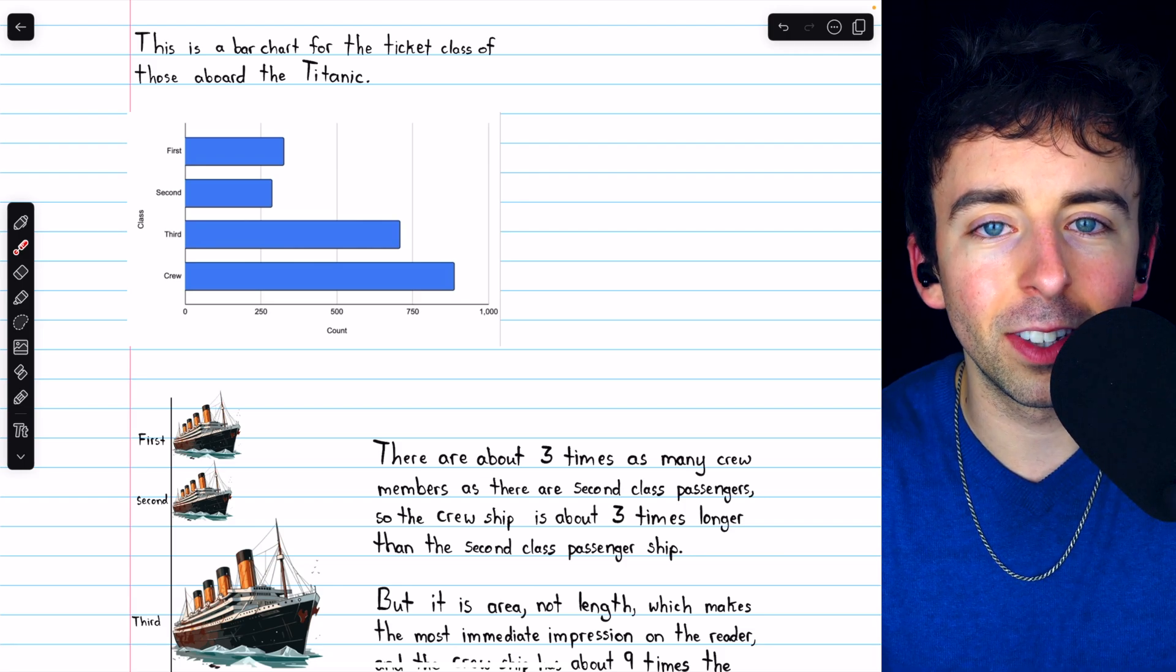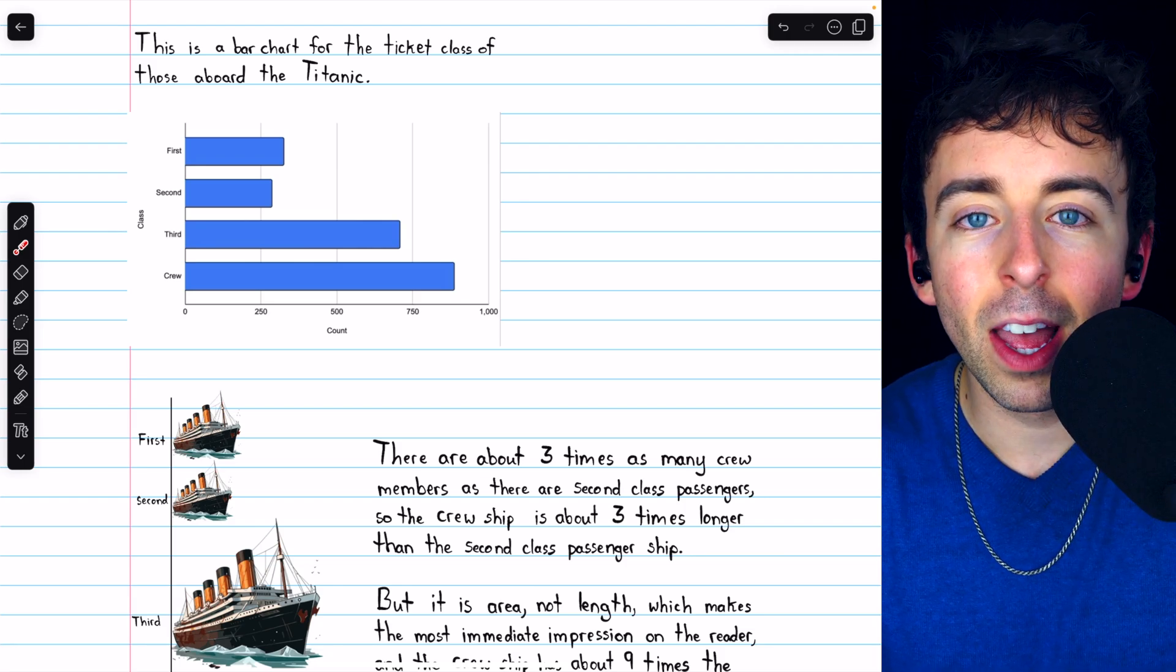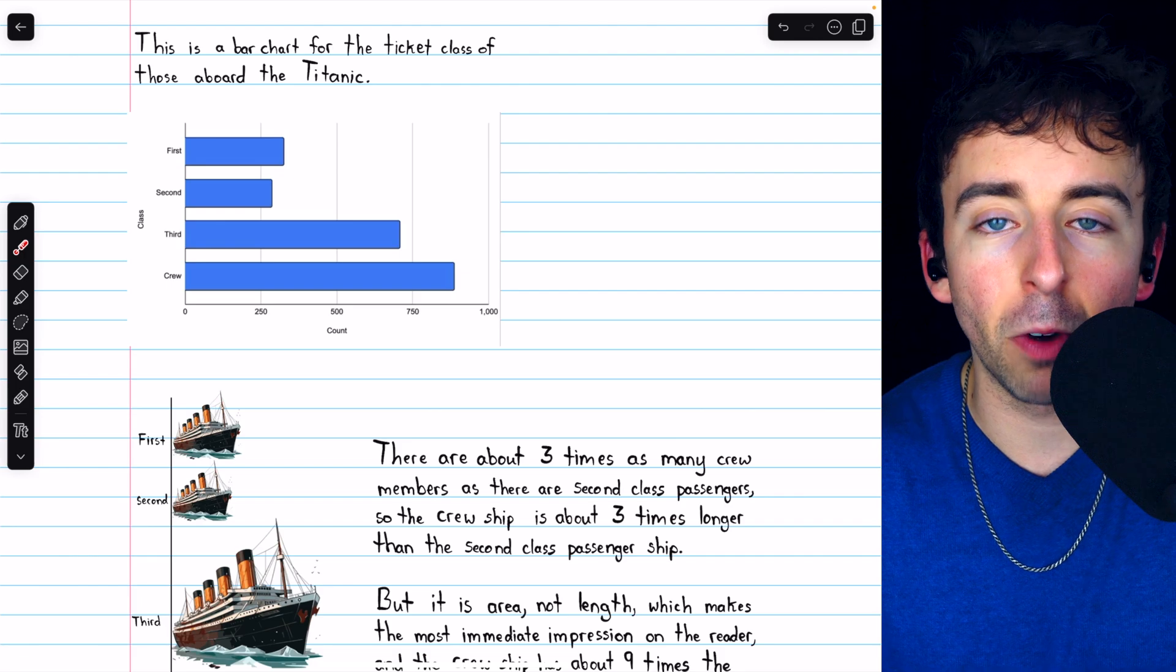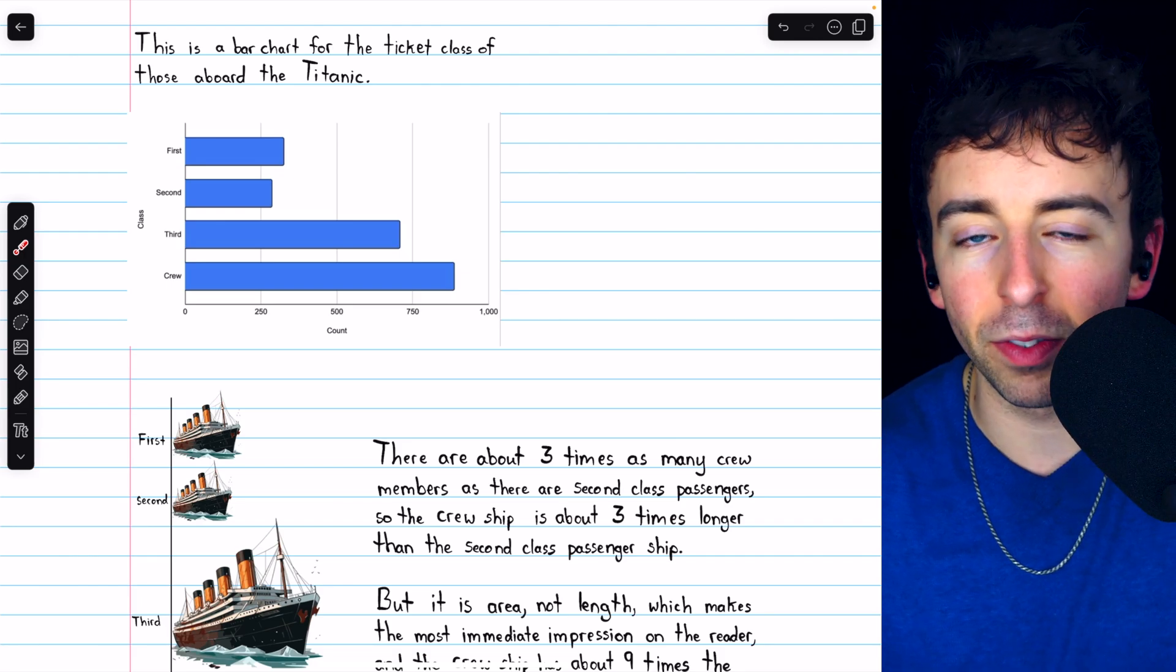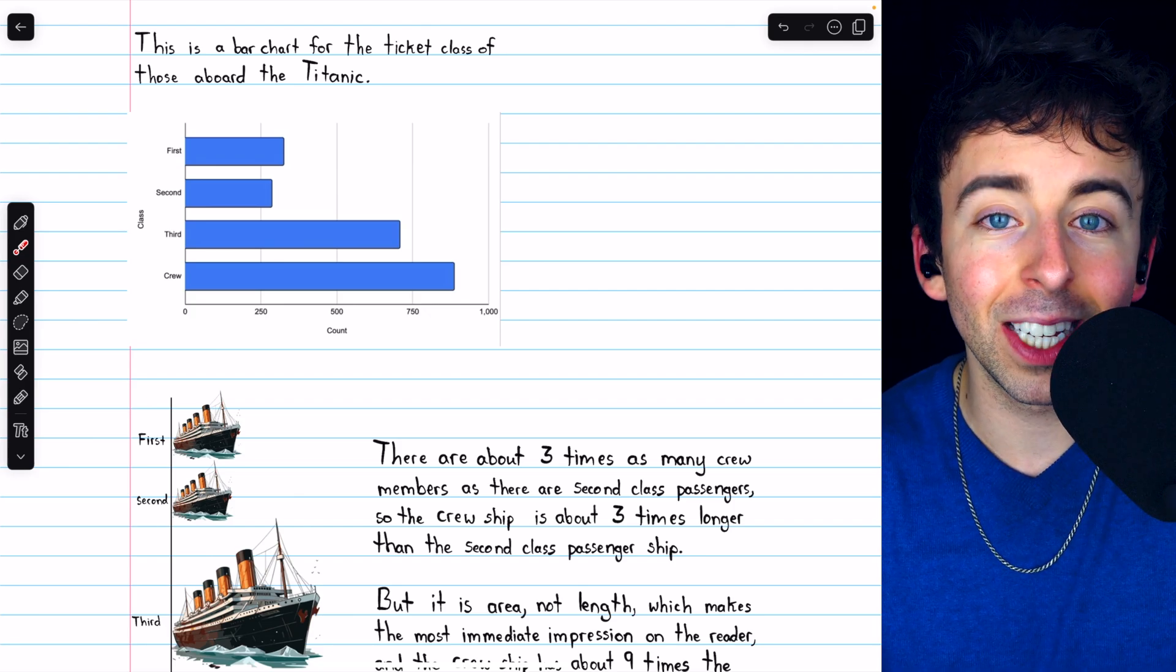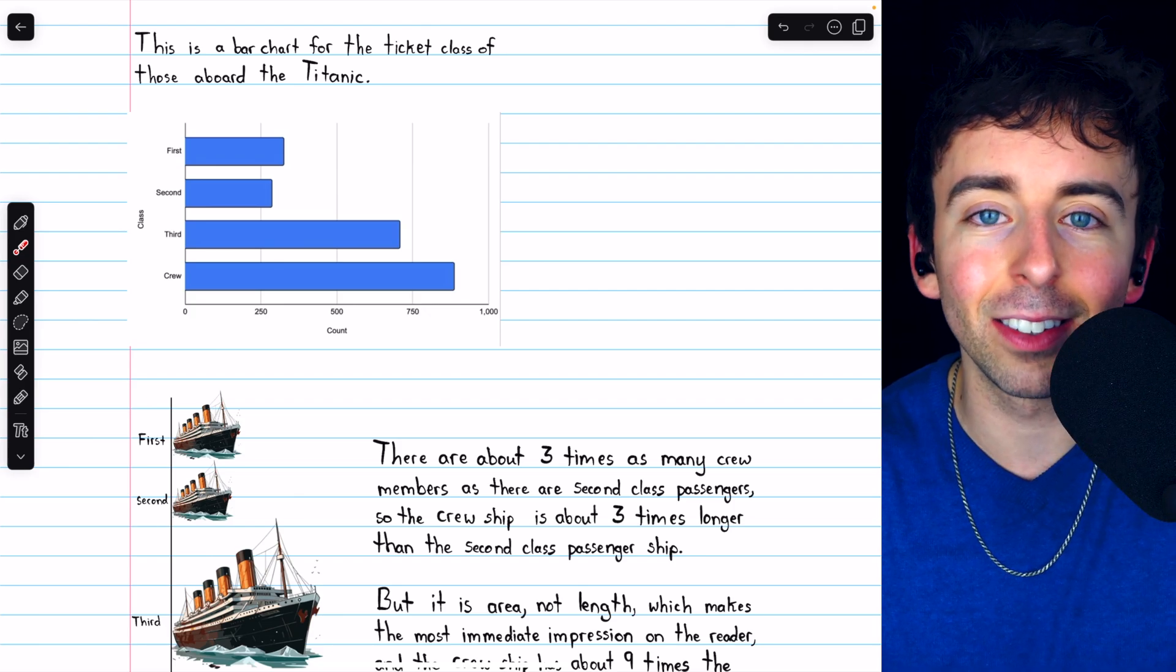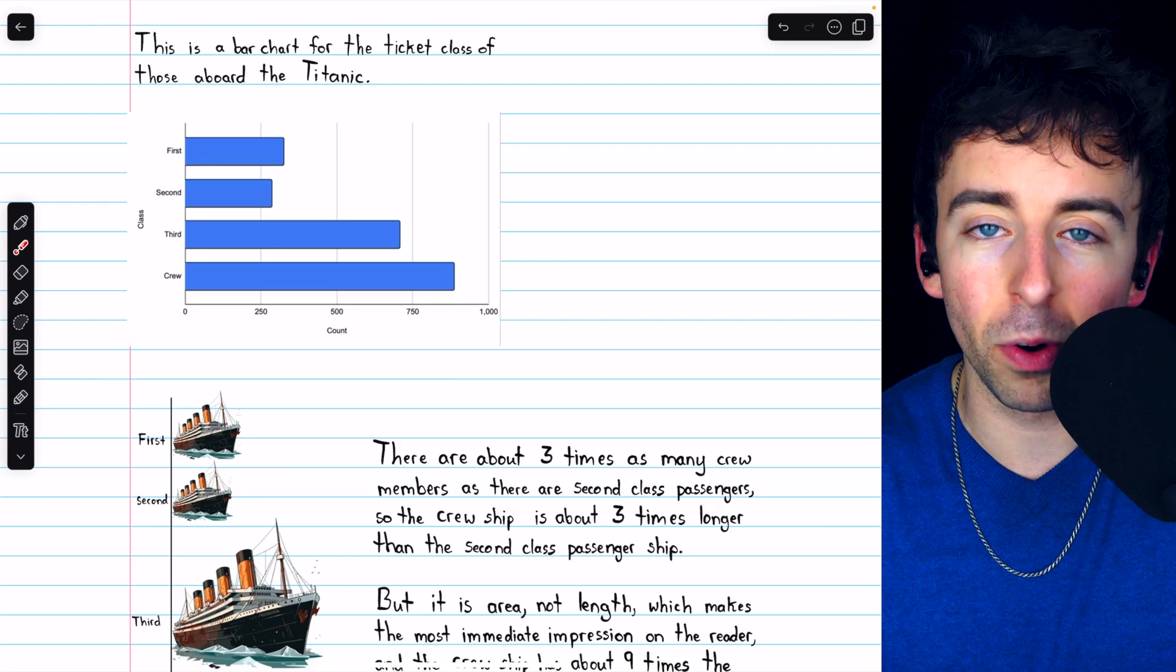Now, we talked about bar charts here since they're really easier to screw up. A pie chart, if you're using it in the right way, just by default is going to satisfy the area principle. If some category makes up 20% of your total, its slice will be 20% of the pie, and so it follows the area principle, no problem.